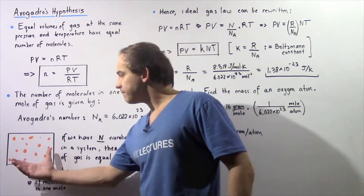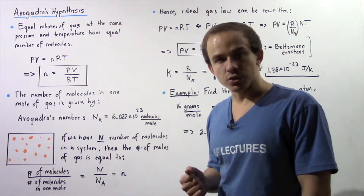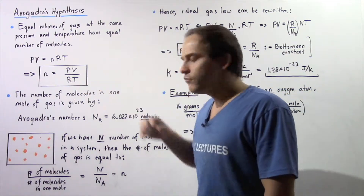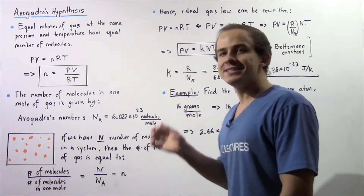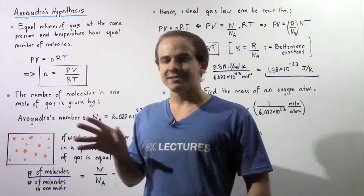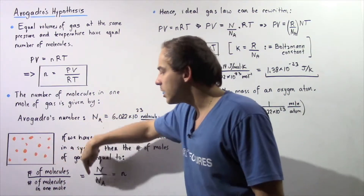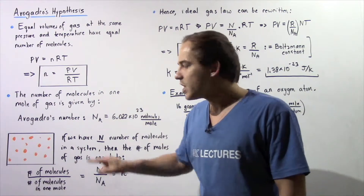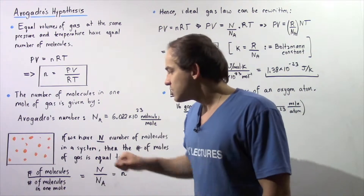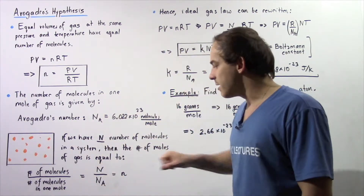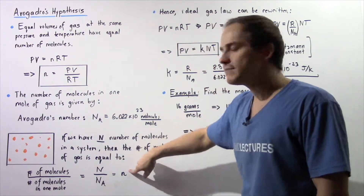Let's suppose that we have the following container. Inside our container we have some given number of molecules. If we have N number of molecules in our given system, then we can determine the number of moles of gas in our system using the following equation: we take the total number of molecules of gas in our system and divide that by the number of molecules in any given mole. So we divide N by Avogadro's number, N_A, and that gives us the number of moles of gas in our system.